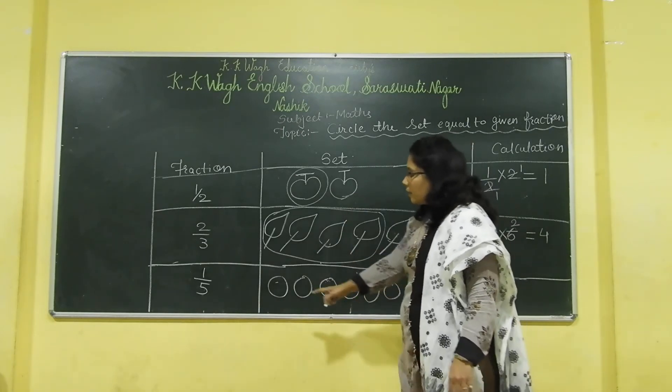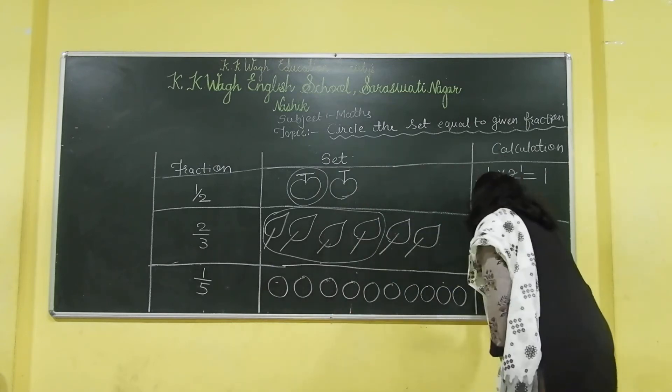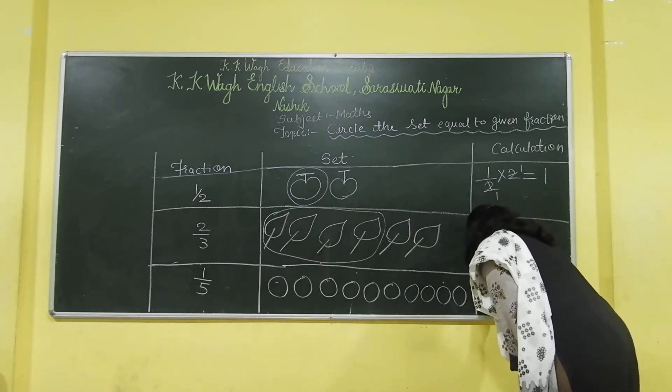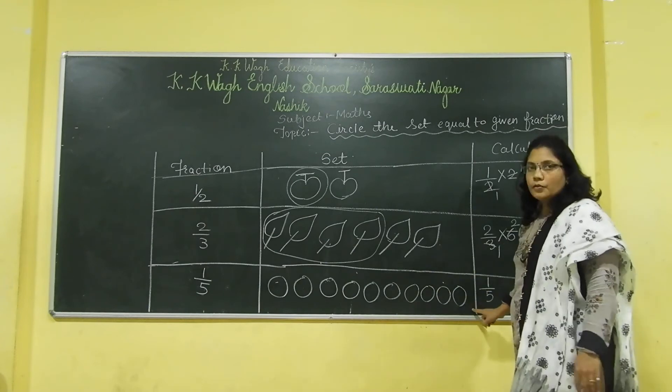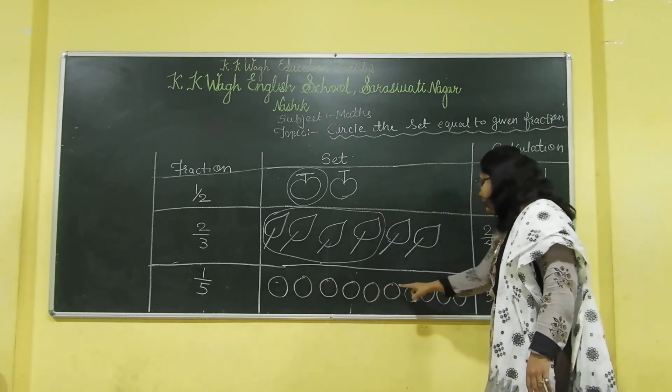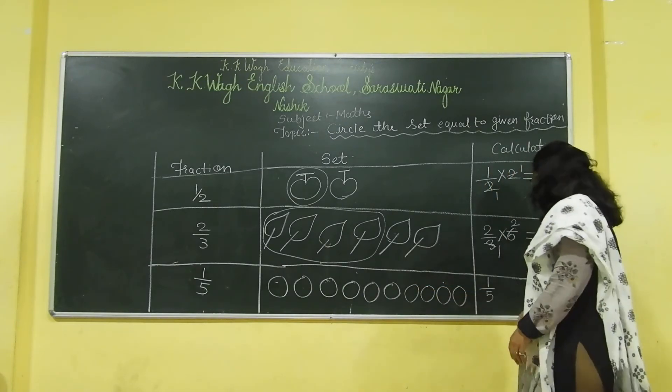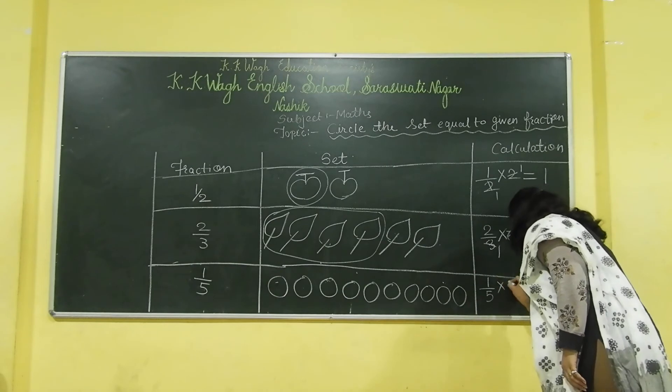Again, let us come to the last one, 1 upon 5. We will write here first of all, 1 upon 5 and multiply it by number of balls here. 1, 2, 3, 4, 5, 6, 7, 8, 9, 10. There are 10 balls given here. So, 1 upon 5 multiplied by 10.